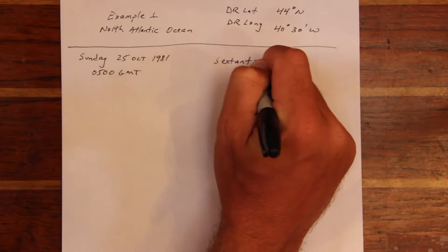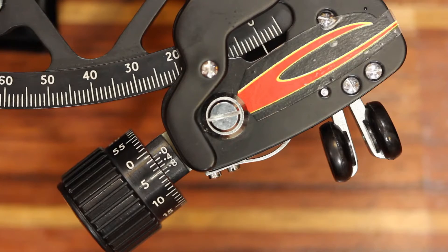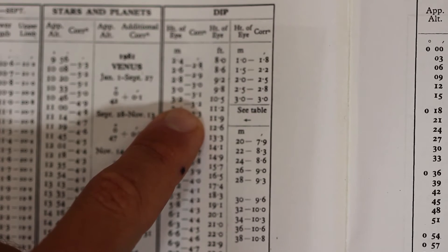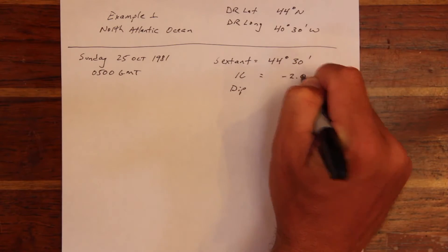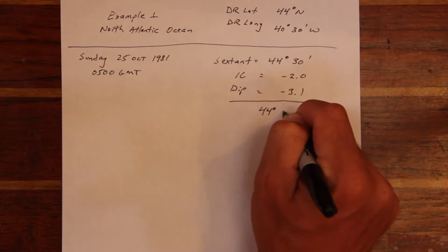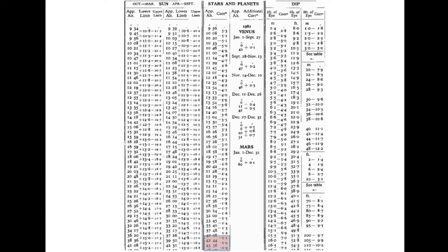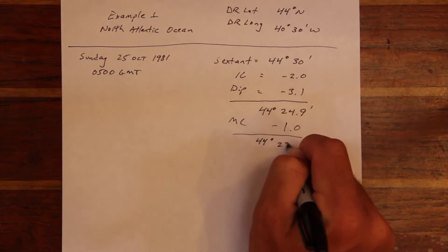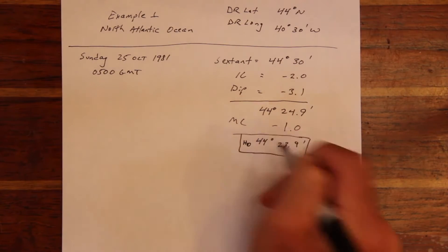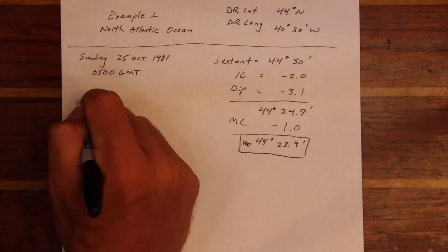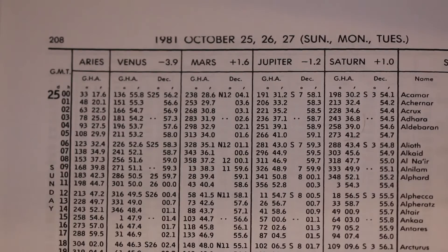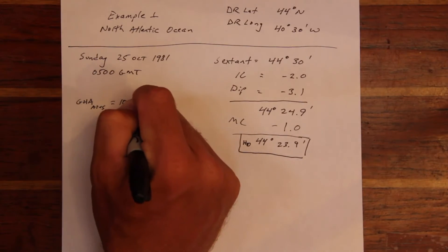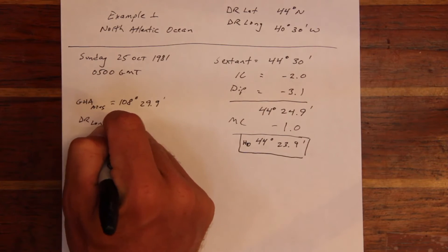Given a dead reckoning position and a time of observation, the first step is to apply our standard sextant corrections. After applying an index correction and a dip correction, we come up with an apparent altitude. The apparent altitude tables for stars and planets are different than the sun — in this case, the apparent altitude correction is 1.0. Once we've determined our observed altitude, the next step is to determine the Greenwich Hour Angle of Aries in the nautical almanac. Since we're in the Western Hemisphere, we apply our dead reckoning longitude position to determine the Local Hour Angle of Aries.